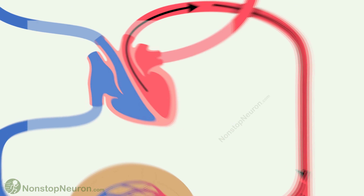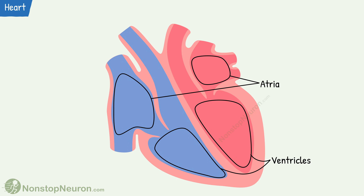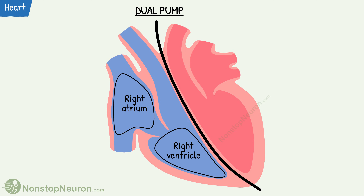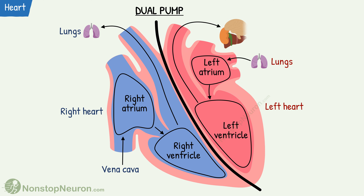Now let's go into more detail about the heart. It is made up of four chambers — two atria and two ventricles. The heart is also referred to as a dual pump because the four chambers make two separate pumps in series. The right atrium and right ventricle make one pump, sometimes also referred to as the right heart. It receives venous blood from the vena cava and propels it towards the lungs. The left atrium and left ventricle make the other pump, also called the left heart. It receives blood from the lungs and propels it to all other tissues of the body.